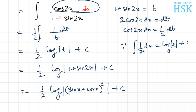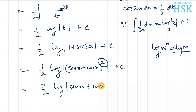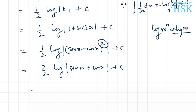This 2 will multiply if I apply the logarithm property log m raised to n equals n log m. This will be equal to 2 upon 2 log of sine x plus cos x plus c, or my final answer would be log of sine x plus cos x plus c. This is my required answer.